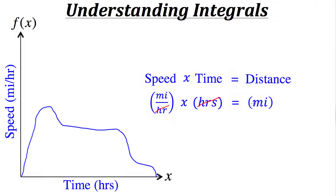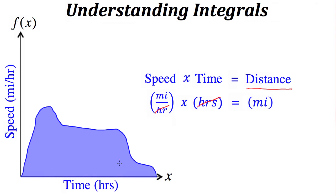Similar to taking speed and multiplying it by time, we need to take the values for speed from our function and multiply them by our values of time. With speed on the y-axis and time on the x-axis, the act of multiplying those two together is finding the area under the curve. So if we find the area of this shaded region, that value would be the distance the object traveled. This is where integrals come into play — the concept of an integral is used to find the area under curves of functions.